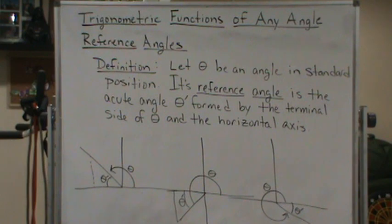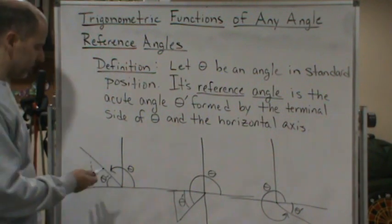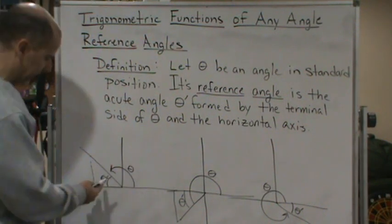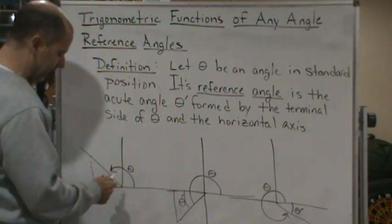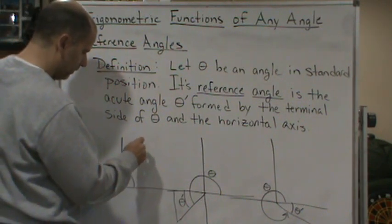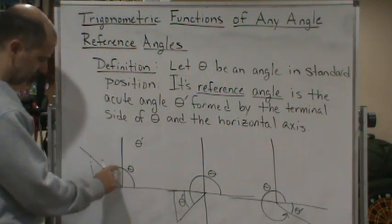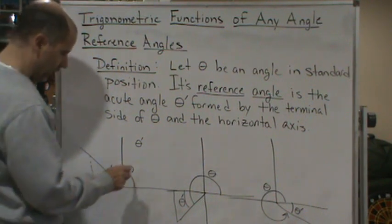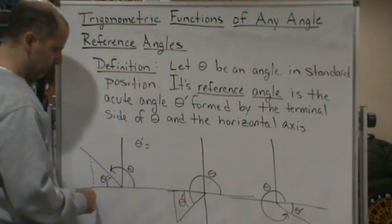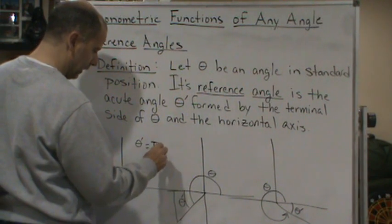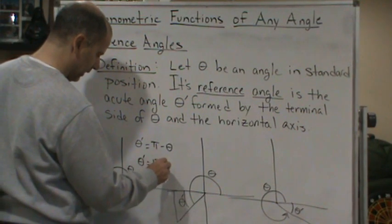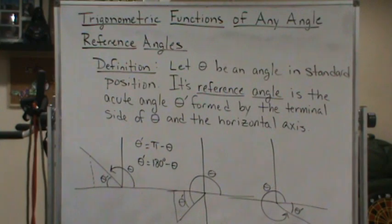Now how do we calculate these? In the first quadrant, θ equals θ'. But in the second quadrant, if you're looking at radians to find θ', you know this is a straight angle - 180 degrees or π radians. So we can calculate θ' by using π minus θ, or 180 degrees minus θ.